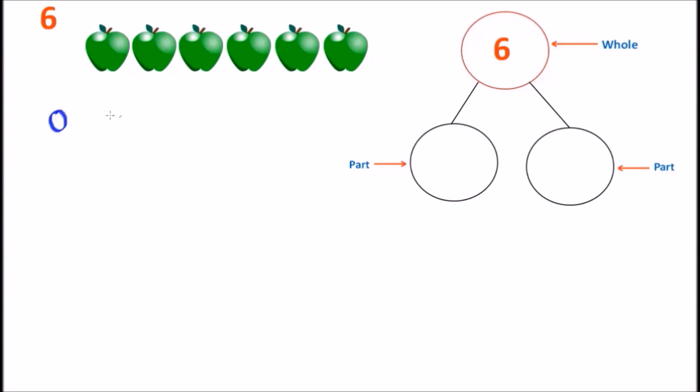Now when doing the number bonds, you can always start with a 0, a 0 and the number. So we have a 0, and we have a 6. So the first part that makes up a number 6 is the number 0, and the number 6. 0 is the left side of the part, and 6 goes on the right side of the part.